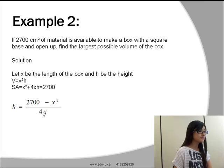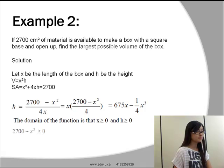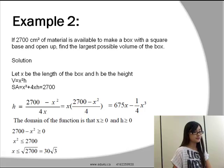H will be equal to 2700 minus x squared over 4x, which will be equal to x times the quantity 2700 minus x squared over 4, which equals 675x minus 1/4 x cubed. The domain of the function is that x is greater or equal to 0 and h is greater or equal to 0 because the dimensions cannot be negative. Therefore, 2700 minus x squared will be greater or equal to 0, so x will be less or equal to 30 times the square root of 3.